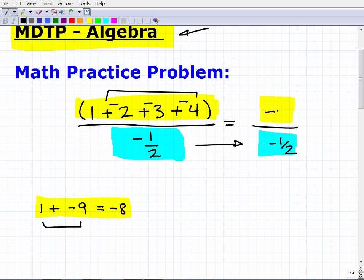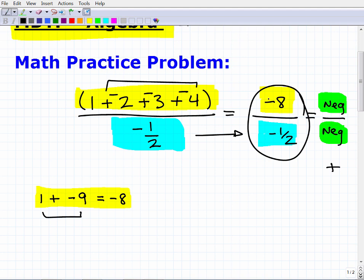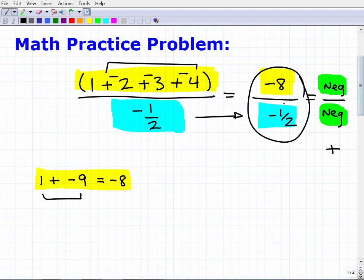Before I go any further, let's take a look at something. I have in the numerator a negative number and in the denominator I have a negative number. What do you get when you divide a negative by a negative? Any negative number divided by another negative number, the answer is going to be positive. These are basic things you definitely need to know to be ready for algebra. A negative divided by negative is going to be positive, so this answer here is going to be positive. I can just forget these negative signs because I know my final answer is going to be positive.